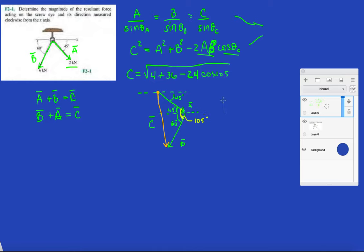So 4 plus 36 minus 24 times cosine 105. And the square root of that, so C is about 6.8 kilonewtons. So that is the magnitude. So you can notice how I don't put a vector on it. I just called it C because it's just a magnitude. There's no direction to it. And now we're going to get the angle that it forms with the x-axis measured clockwise from the x-axis like they asked us to.